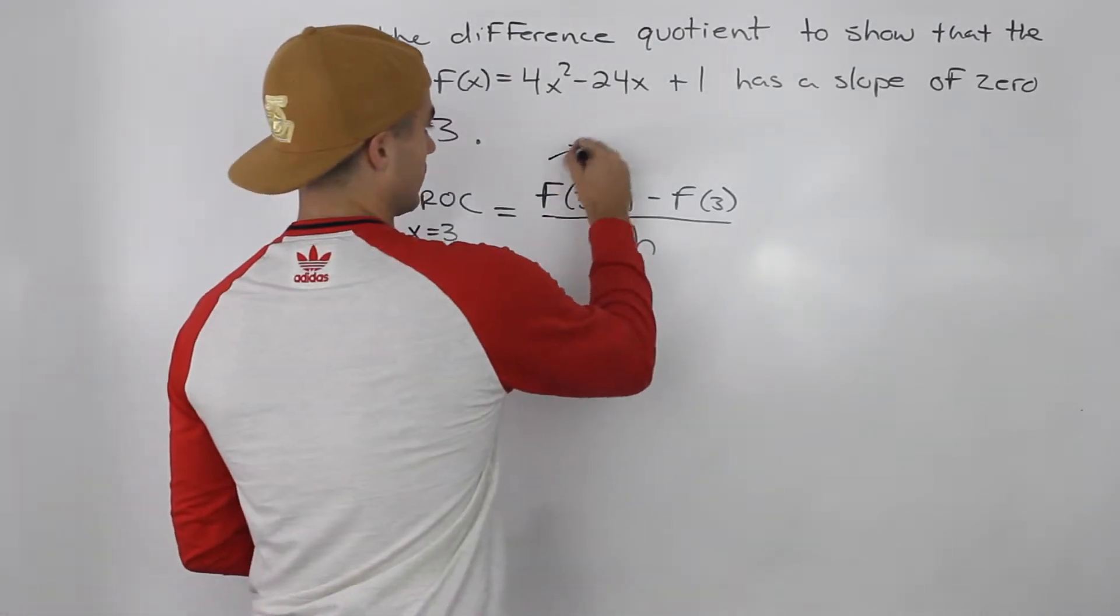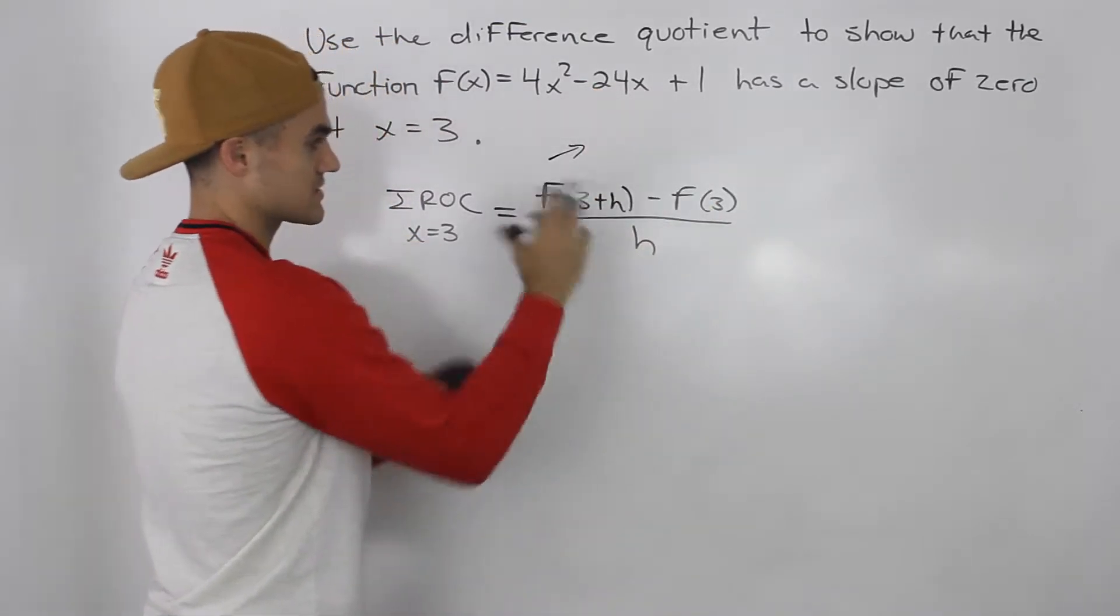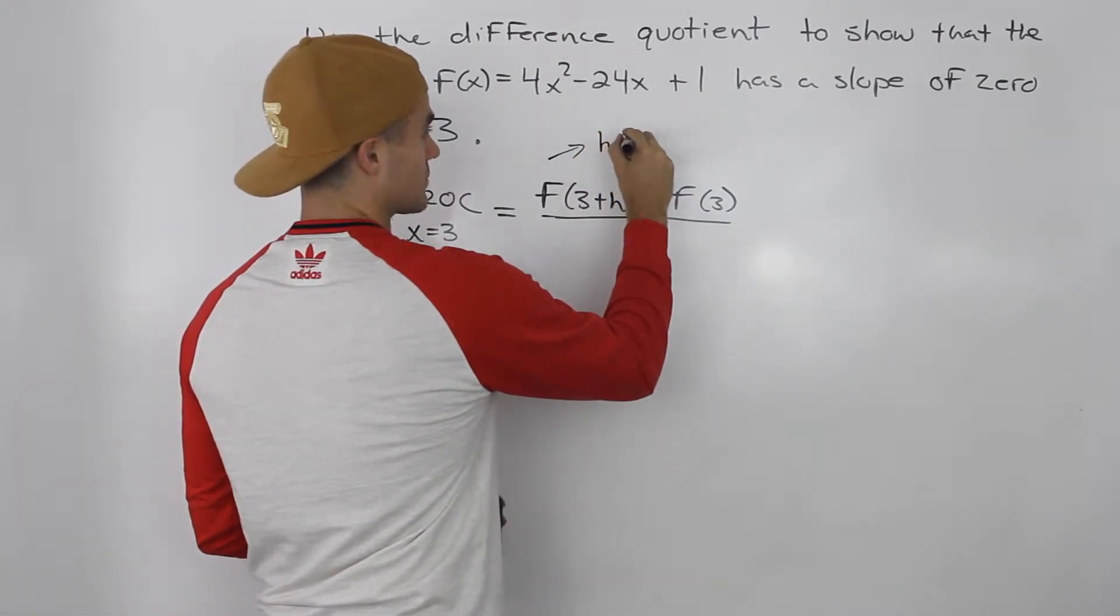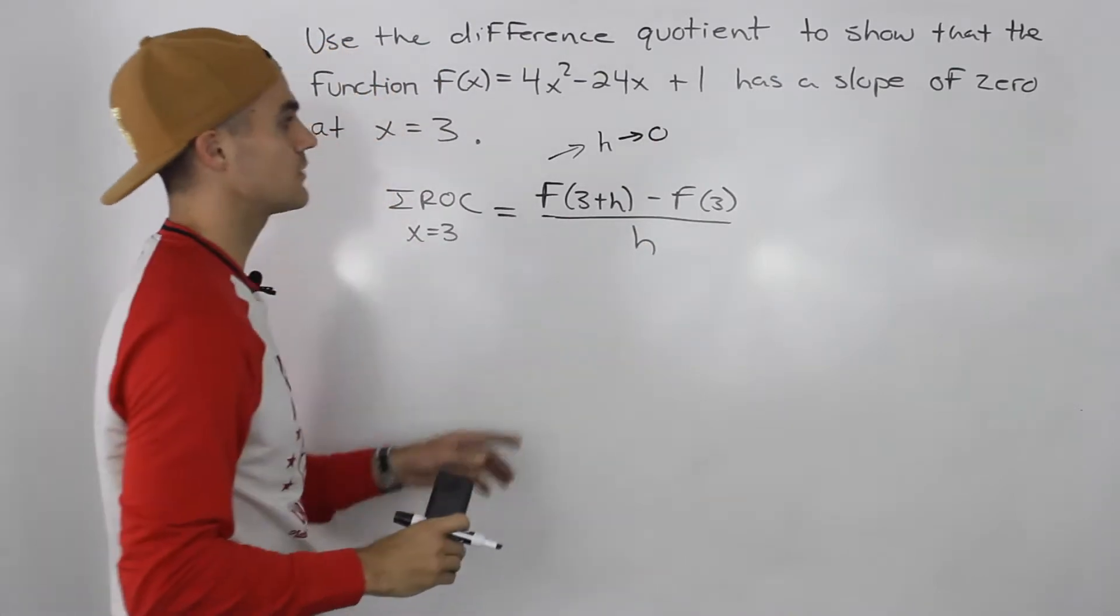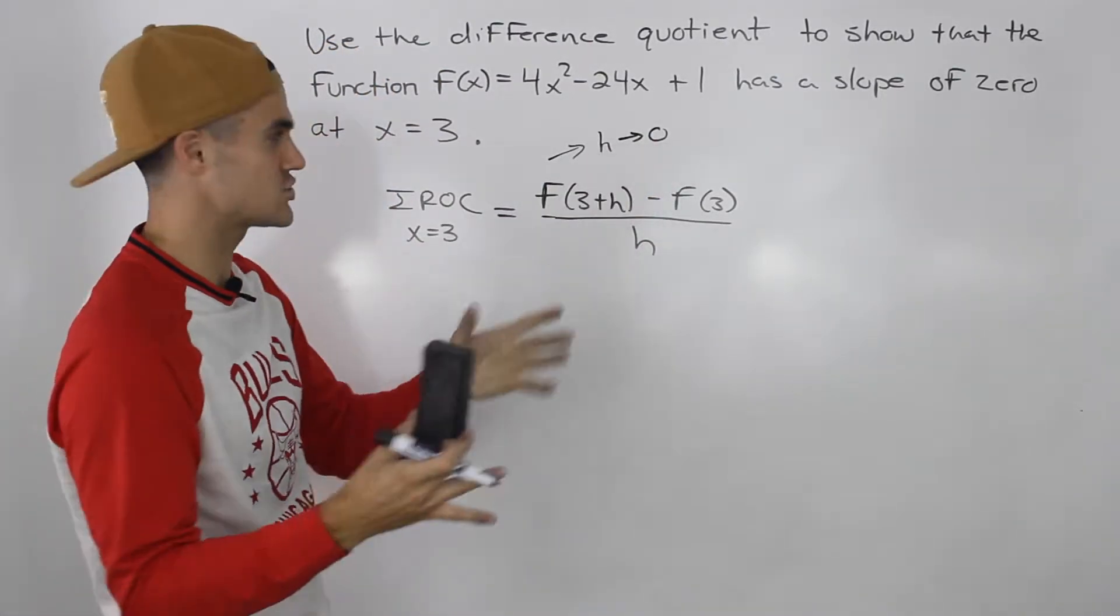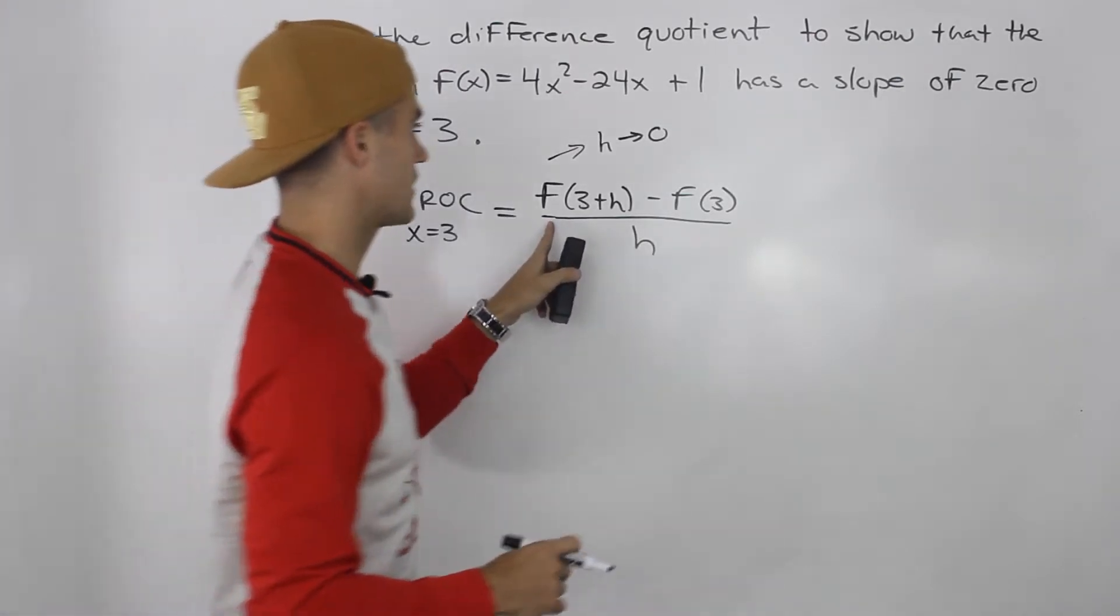So what we're going to do is we're going to have to plug in 3 + h for x and then 3 for x all over h. We're going to have to simplify this. And then at the end, what we're going to have to do is we're going to have to plug in an h value of 0 or we're going to have to see what happens to this expression as h approaches 0 as h gets very small. So let's do these on the side here.